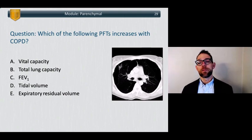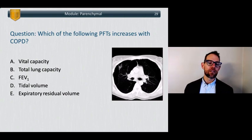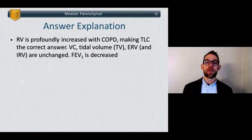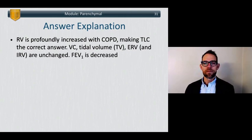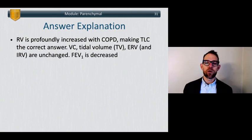Question: which of the following PFTs increases with COPD? A. Vital capacity. B. Total lung capacity. C. FEV1. D. Tidal volume. E. Expiratory residual volume. The answer is B, total lung capacity. Remember it is residual volume that increases dramatically in COPD — therefore FRC increases as well. Tidal volume, vital capacity, IRV, and ERV are largely unchanged. And of course, as these are big fluffy lungs, FEV1 is decreased.